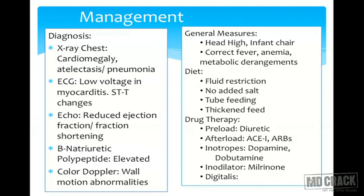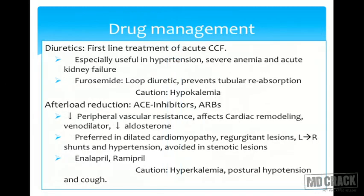Drug therapy aims at reducing the preload, reducing the afterload, and increasing the contractility of the heart. Reduction of preload is achieved with diuretics, reducing intravascular volume. The preferred diuretics are loop diuretics such as furosemide, especially when associated with hypertension or severe anemia. Caution must be exercised by monitoring potassium levels because loop diuretics cause hypokalemia.